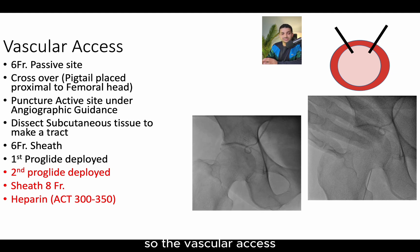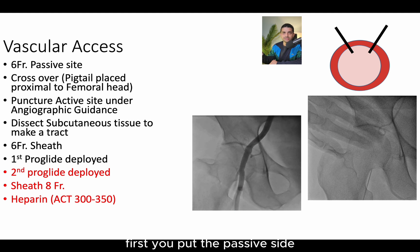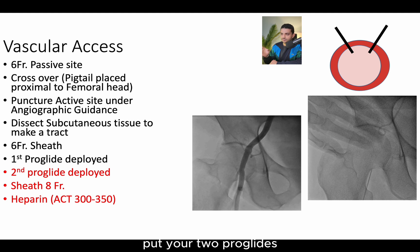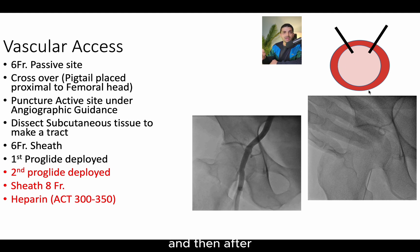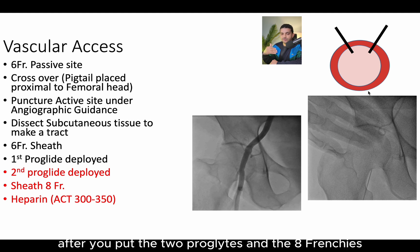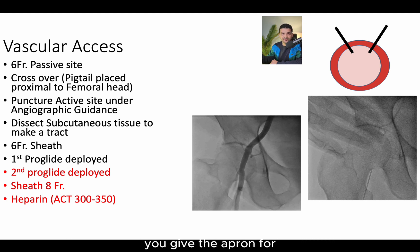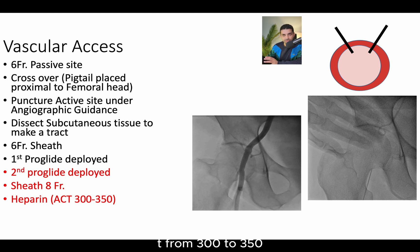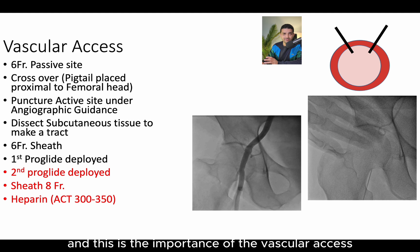So for the vascular axis, these are the steps: first, you put the passive side, you cross over, you get the active side and prepare it, put your two proglides as shown in the diagram. Then, after you finish all this preparation — after you put the two proglides and the eight French sheath — you give the heparin for full heparinization and adjust the ACT from 300 to 350. This is the importance of the vascular axis.